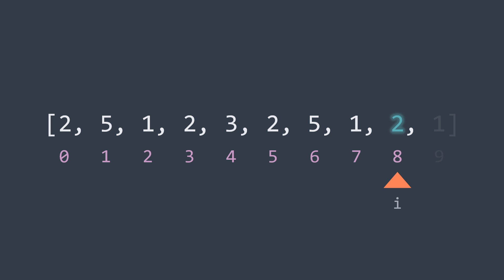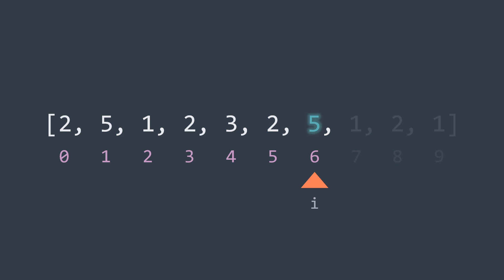At index 8, we already found the value 2 three times, so it's the second element of 3 good pairs. At index 6, we have the value 5 that we already saw once before, so we found one new good pair and add 1 to the counter. So in general, at each index, if we already saw that value n times before, we add n to the counter — that is the main strategy of this second solution.